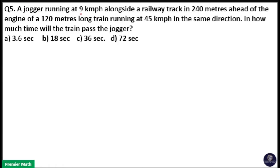Number five: A jogger running at 9 kilometers per hour alongside a railway track is 240 meters ahead of the engine of a 120 meter long train running at 45 kilometers per hour in the same direction. In how much time will the train pass the jogger?